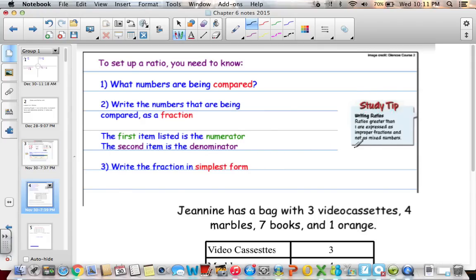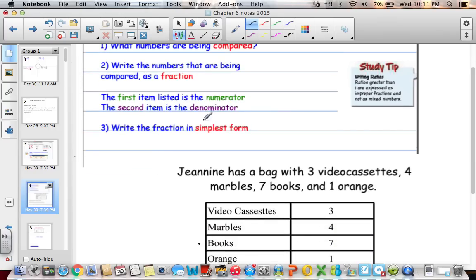And then over here, ratios greater than 1 are expressed as improper fractions and not as mixed numbers. So we have to remember that even though we're used to changing improper fractions to mixed numbers, we keep them as a fraction and keep it improper. And then we always write the fraction in simplest form.